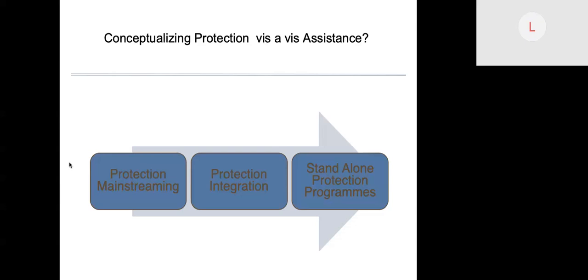Protection integration involves incorporating protection objectives into the programming of sector-specific responses to achieve protection outcomes. Integrated protection programming requires all humanitarian actors to commit, wherever feasible and appropriate, to protection objectives in the design of their activities. Standalone protection programs are typically managed by protection actors and humanitarian actors with protection expertise, playing a role in ensuring the implementation of specialized protection activities with specific objectives to achieve protection outcomes.